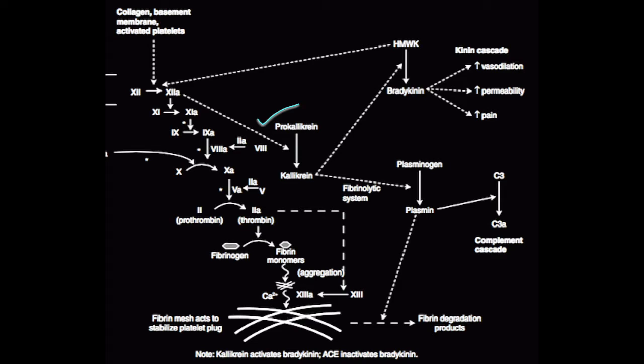Calicrayon functions to enhance inflammation and also initiate clot breakdown. The former starts where calicrayon converts high molecular weight kininogen into bradykinin, which begins a kinin cascade that increases vasodilation, vessel permeability, and pain, all of which should be familiar signs of inflammation.